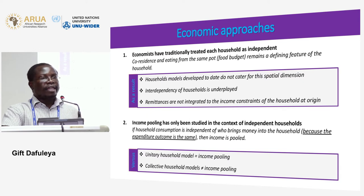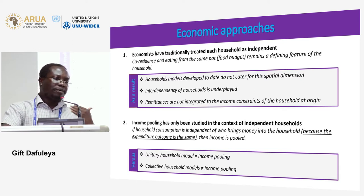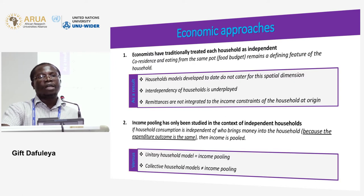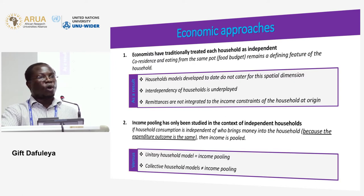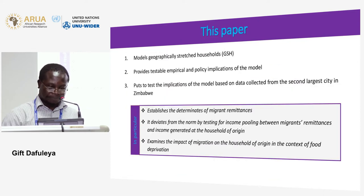The formal models, especially those led by Becker, use the unitary household model which equates to income pooling. Alternative models have since emerged, like the collective household models, which do not equate a household to an income pooling unit.